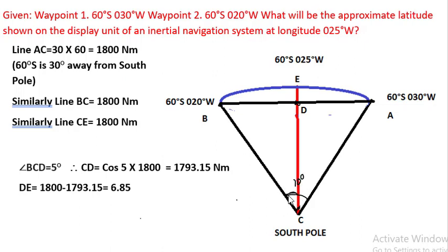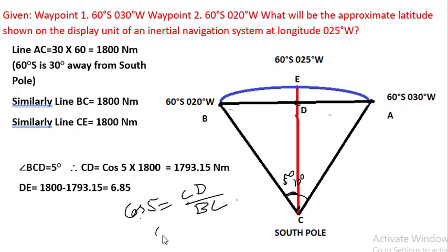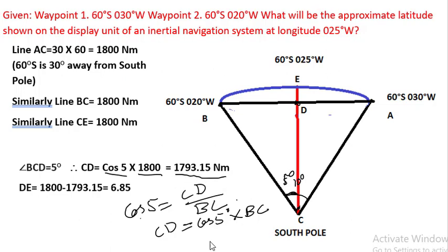We know angle A-C-B is equal to 10 degrees, so considering triangle B-C-D, half of this — that is angle B-C-D — is going to be 5 degrees. Now, cos 5° equals the adjacent side C-D divided by the hypotenuse B-C. Therefore, C-D equals cos 5° × B-C, which is cos 5° × 1800 = 1793.15 nautical miles.